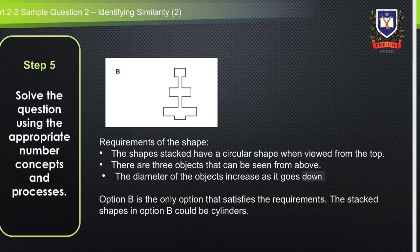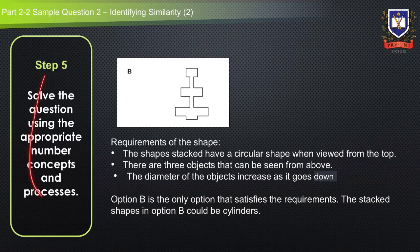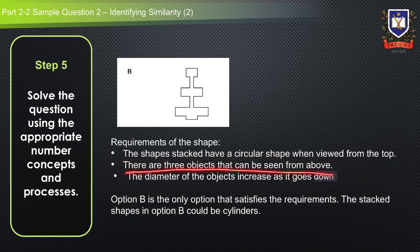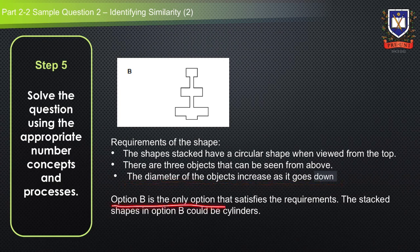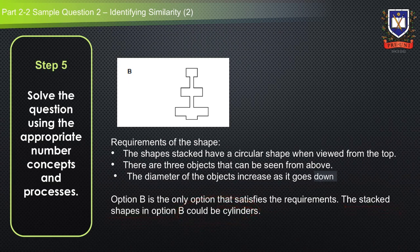Step five is where we solve the question using appropriate number concepts and processes. The requirements are: the stacked shapes have a circular shape when viewed from the top, there are three objects visible from above, and the diameter of the objects increases as it goes down. Option B is the only option that satisfies these requirements — the stacked shapes in option B could be cylinders, which is why the side views are rectangles.